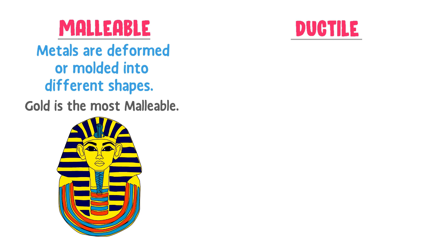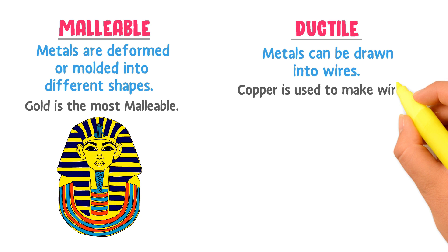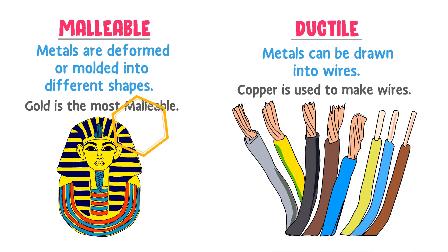Secondly, ductility of metals means that they can be drawn into wires. For example, copper is used to make wires for the flow of current. This property of metals is called ductility.